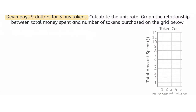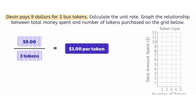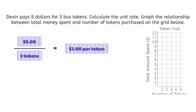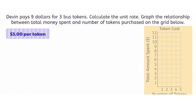Devin pays nine dollars for three bus tokens. Calculate the unit rate and graph the relationship between total money spent and number of tokens purchased on the grid below. To find the unit rate, we need to determine how much money Devin pays per token. We can find this by dividing the amount of money spent by the number of tokens they bought. Devin paid three dollars for each bus token. Now that we have our unit rate, let's graph this proportional relationship.